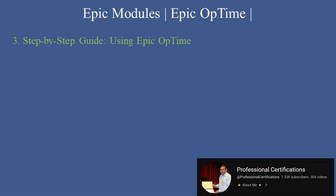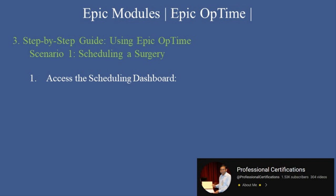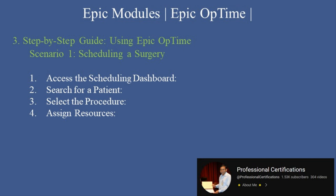Step-by-step guide using Epic Optomy. Scenario 1: Scheduling a Surgery. Step 1: Access the Scheduling Dashboard — navigate to the Optomy Scheduling Dashboard in Epic Hyperspace. Step 2: Search for a patient — enter the patient's name or medical record number (MRN) to locate their chart. Step 3: Select the procedure — choose the surgical procedure from a predefined list of codes or templates. Step 4: Assign Resources — allocate an operating room, surgical team members, and required equipment. Step 5: Confirm and Save — review the schedule for conflicts and finalize the booking.